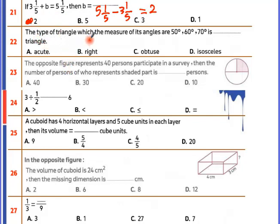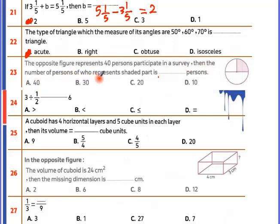The type of triangle with angle measures 50, 60, 70: the largest angle is 70, which is acute, so it's an acute-angled triangle. A figure represents 40 persons. The shaded part is a quarter of the circle, so 40 divided by 4 equals 10 persons.